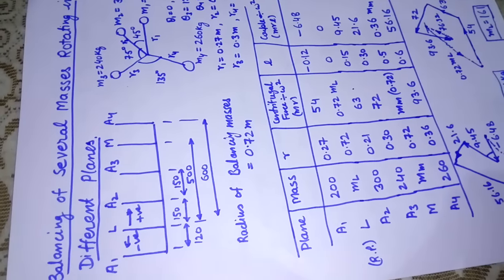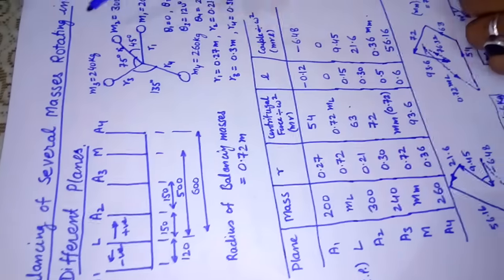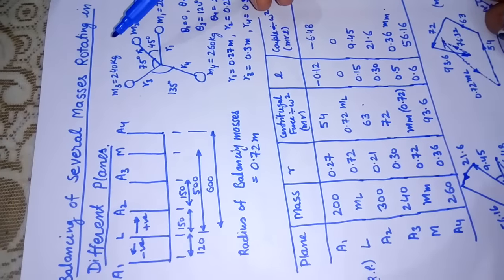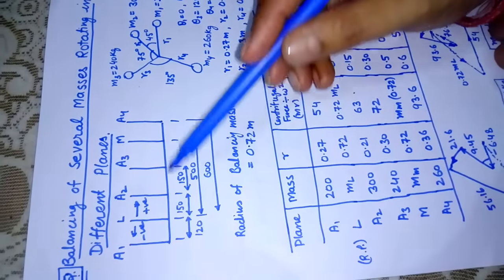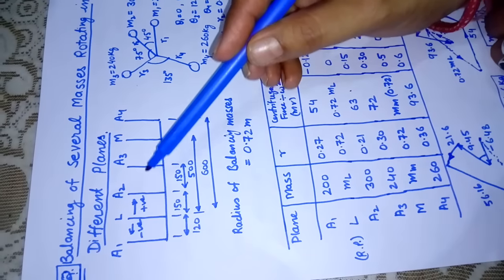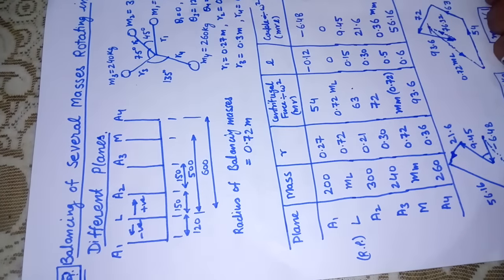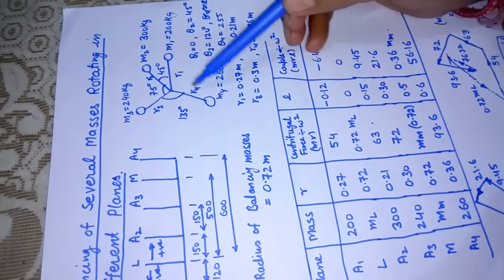Today we are picking up the problem of balancing several masses rotating in different planes, known as dynamic balancing problem. There is a shaft and a number of masses are rotating at different planes: a1, a2, a3, and a4 are different planes. The masses rotating are m1, m2, m3, and m4.